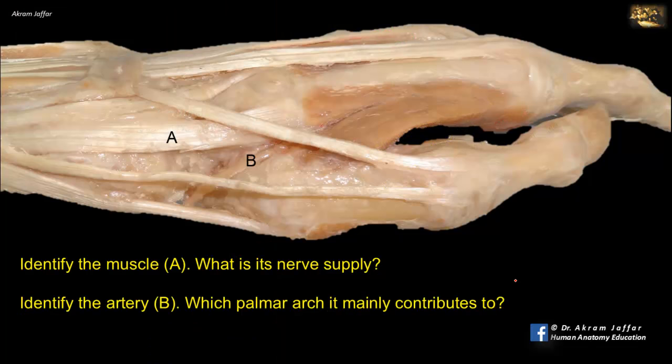Identify the muscle A, what is its nerve supply, and identify the artery B and which palmar arch it mainly contributes to. This is a view of the dorsolateral aspect of the wrist where the anatomical snuffbox is located. The tendons of abductor pollicis longus and extensor pollicis brevis bound the anatomical snuffbox anteriorly.